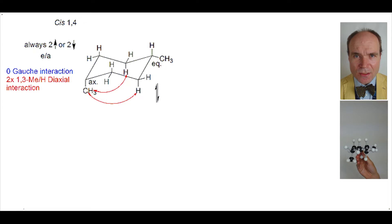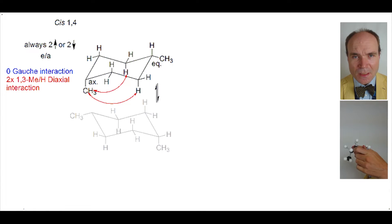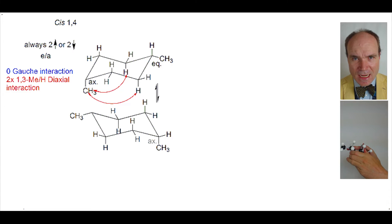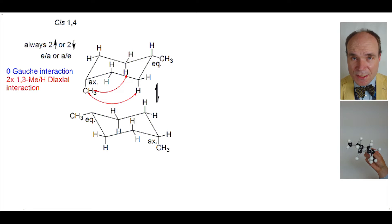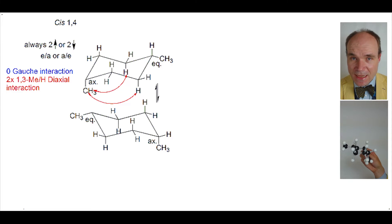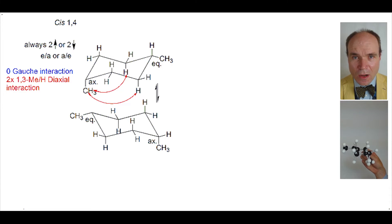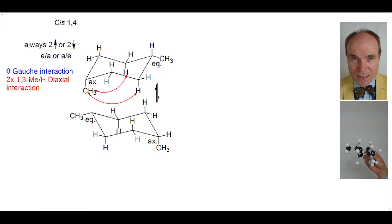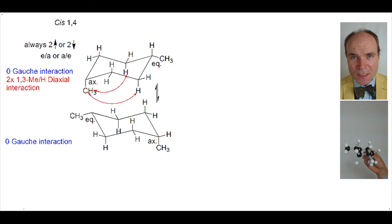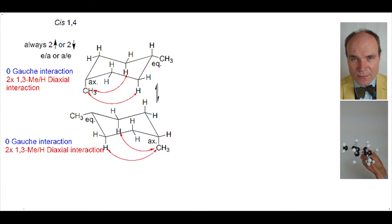Let's ring flip this chair and look at the alternate chair conformation. Now one of the methyl groups is in an axial position and one in an equatorial position. The methyl group that was originally in the equatorial position is now in an axial position, and the methyl group that was originally in an axial position is now in an equatorial position. But still, both methyl groups are on the same side of the ring. When we look at the steric strain within this alternative chair conformation, we can see that there are no gauche interactions, but again we do have two 1,3-diaxial interactions between hydrogen and a methyl group.